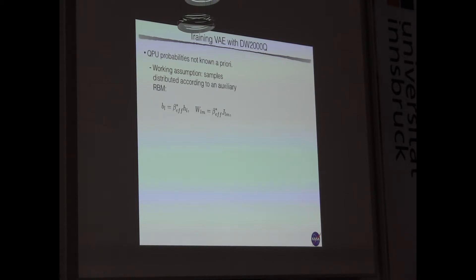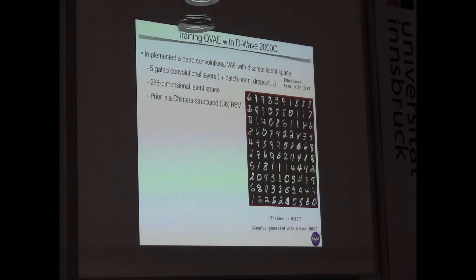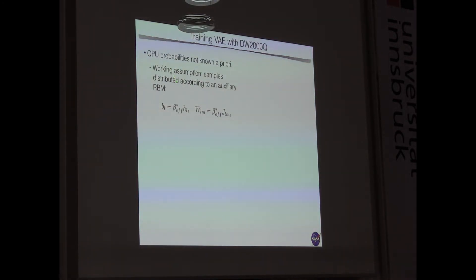Now, the technical thing is that we don't know the... I can show you that. That looks nice. But we want to have a more quantitative evaluation of what we are doing. The problem with that is that if we treat the hardware as a black box, we don't know the probabilities of getting a given sample a priori. But we can assume, and that's actually a working assumption, that they are distributed according to a classical Boltzmann machine up to some effective inverse temperature. So we want to extract that, and we do extract that during training. And we have a behavior like this, and we see some fluctuations.